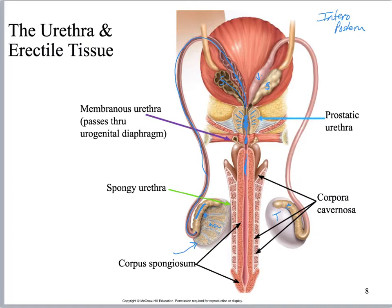You can see the two columns of corpora cavernosa forming wings on the dorsal side of the penis. Because this is cut in the inferior transverse plane you're seeing mostly corpus spongiosum, which completely encases the urethra. And here's a nice view of the bulbourethral gland — though it isn't labeled.